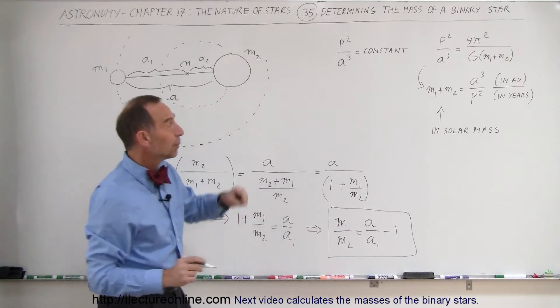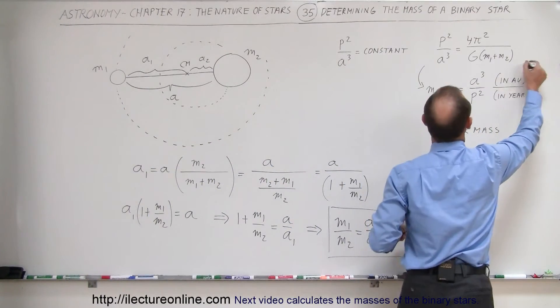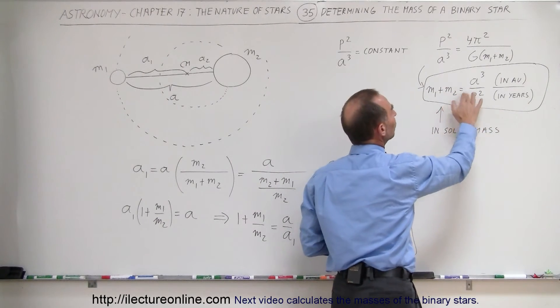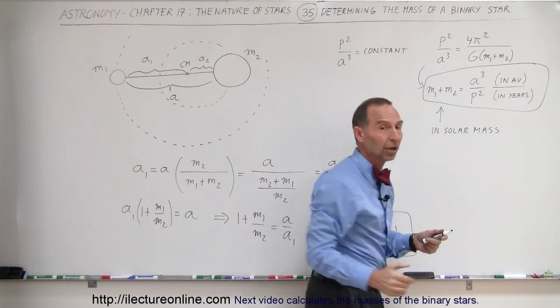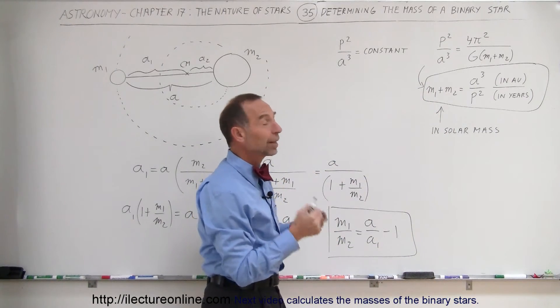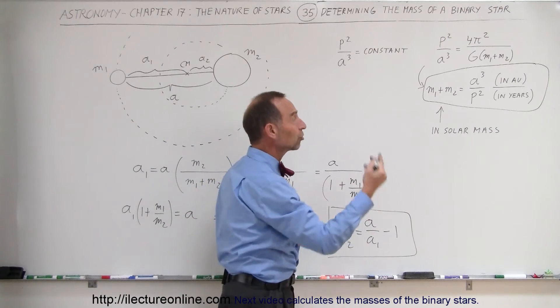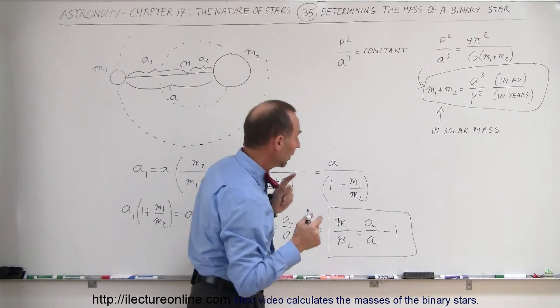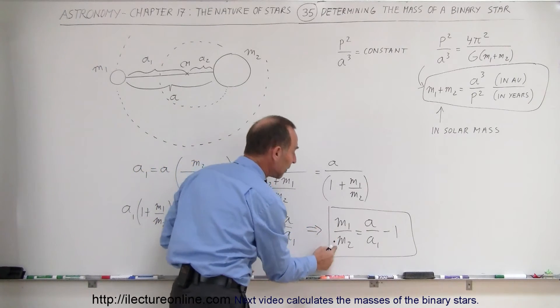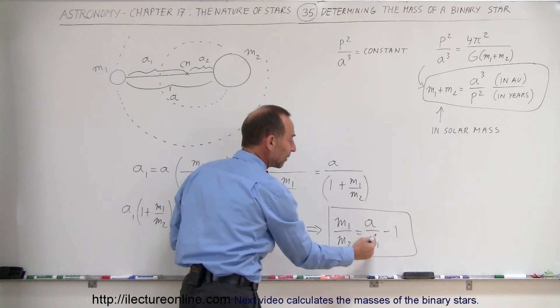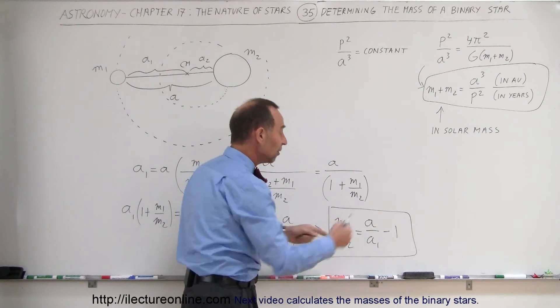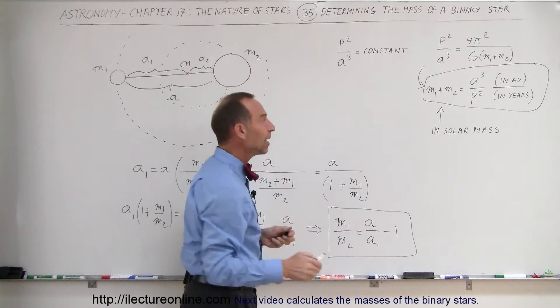Well, first of all, over here we have an equation that told us that the sum of the two masses in a binary star system is always equal to A cubed divided by P squared. The distance between them cubed in astronomical units divided by the period that the small star takes to go around the large star in years. We also found out that the ratio of the masses M1 divided by M2 is equal to the total distance between them divided by the distance from the small star to the center of mass minus 1. Now we have two equations.